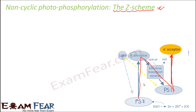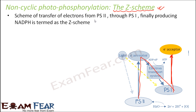If you look at the path which the electron follows, it takes the shape of a Z — and that is why it is known as the Z-scheme. It is the scheme of transfer of electrons from PS2 through PS1, finally producing NADPH, and is known as the Z-scheme because of the shape it takes on the diagram. The process started at PS2 and ended at PS1, so it is a non-cyclic process.